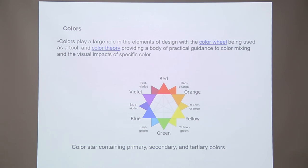For example, if you take red, it can be a danger symbol or it can be a love symbol. When you take white, it can be purity or it can be peace. Similarly, each colour has a psychological balance. Today, colour theory is going to be about primary colour and secondary colour. Primary colours are RGB — red, yellow and green — whereas secondary colour is any colour mixed with your primary colour.